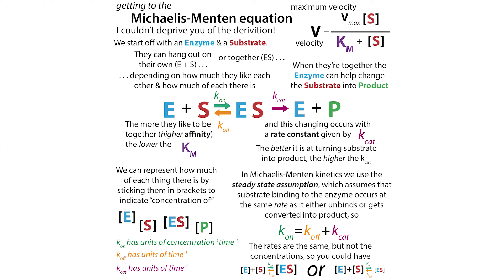I'm not going to make you derive the Michaelis-Menten equation, but I highly recommend you do because it's really helpful to see where things come from. Just know that the Michaelis-Menten equation comes down to these rate constants: your Kcat, your K-on, your K-off. Remember that rate constants are going to be different from your rate.